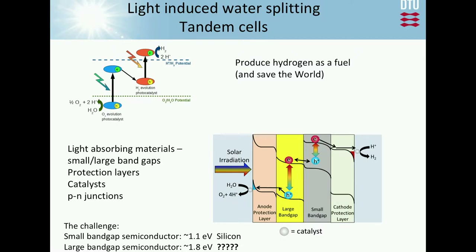The devices people work with are quite complicated. We have two semiconductors, protection layers to protect them from water, and catalysts to get the chemical reactions running. Some of these components we know how to handle, but one real challenge is: what should be the large bandgap semiconductor? Silicon works well as the low bandgap one with an optimal bandgap around 1.1 eV, but the large bandgap one should be around 1.8 eV — that's the material we want to find.